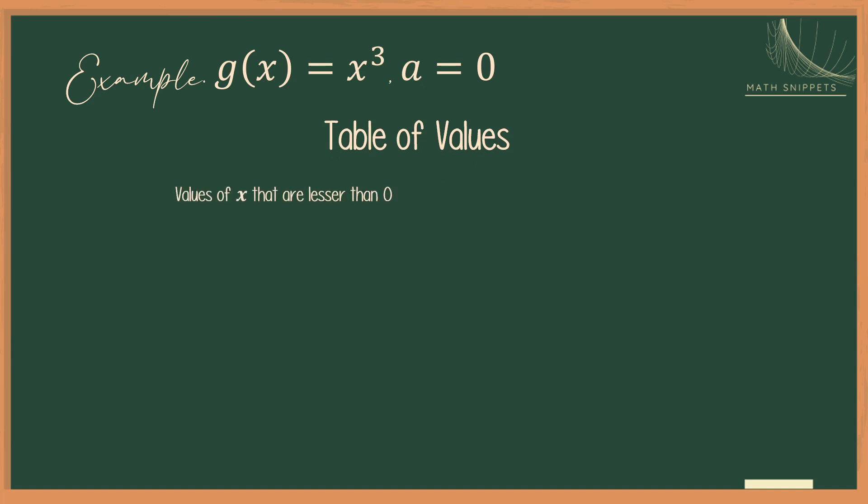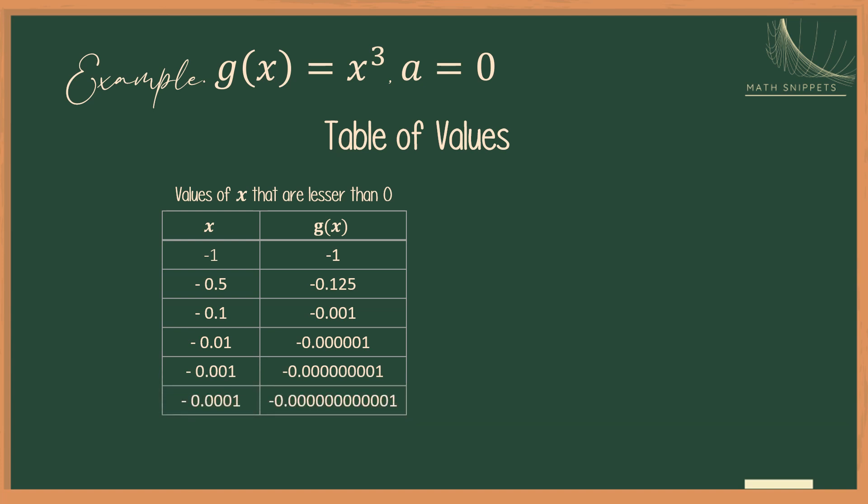Let's see first the behavior of the function as x approaches 0 from the left, or from values that are less than 0. If you observe in the table as x approaches 0 from the left, the function values stay negative, but they are getting closer and closer to 0. So we say that the left-hand limit, or the limit of g of x as x approaches 0 from the left, is 0.